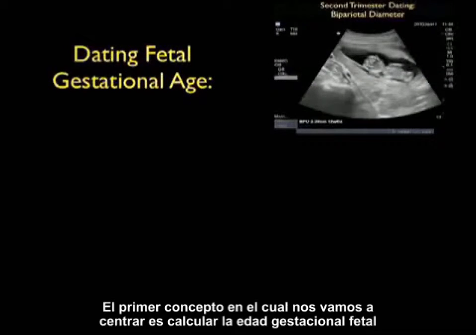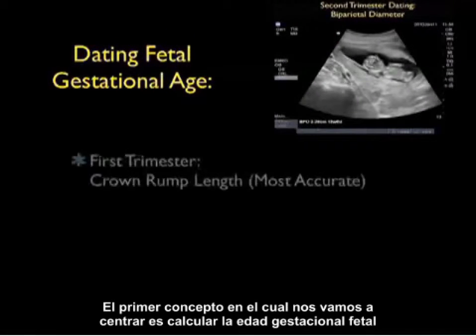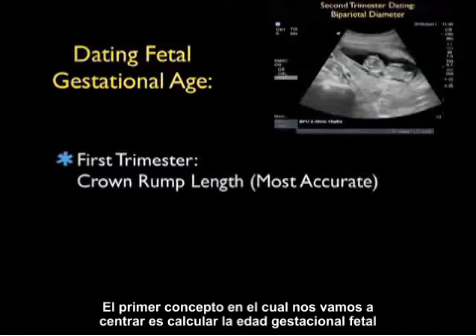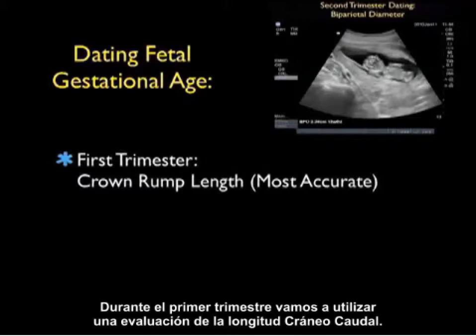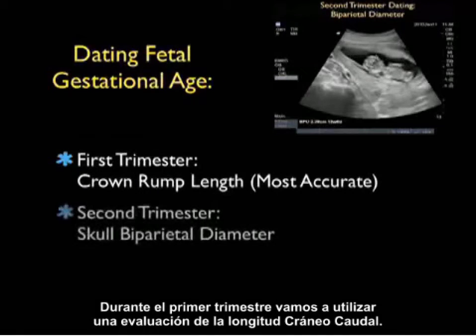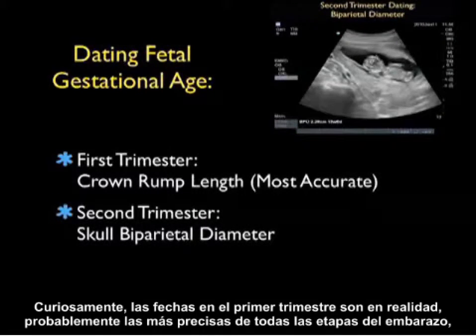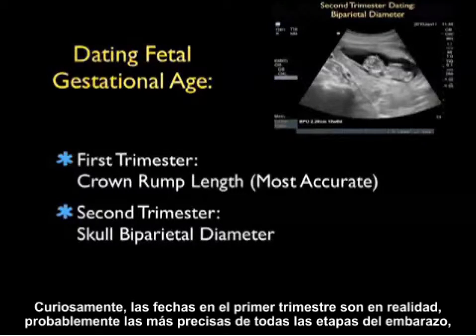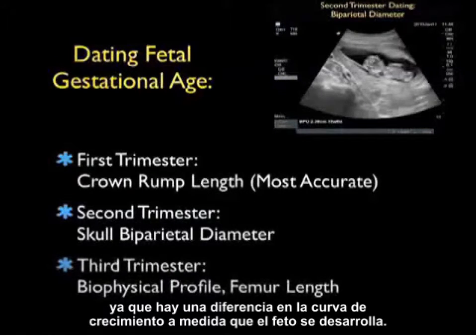The first concept we'll focus on is dating fetal gestational age. In the first trimester, we're going to use an assessment of the crown rump length. Interestingly, dating in the first trimester is actually probably the most accurate during all phases of pregnancy.